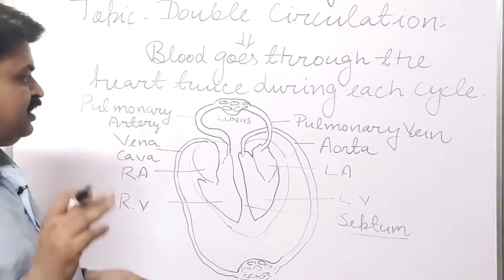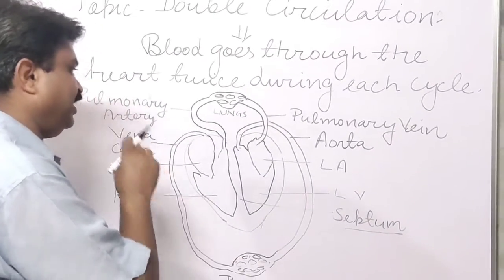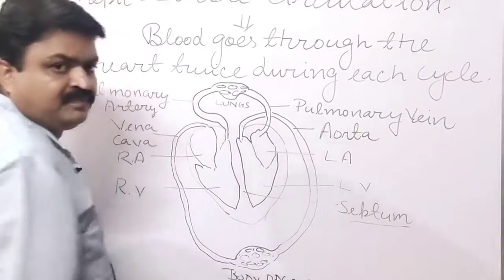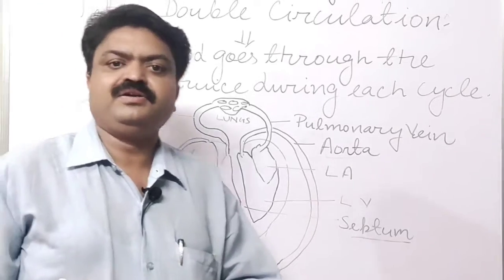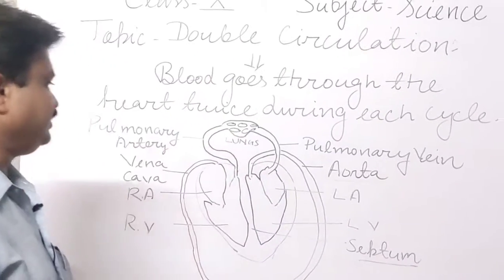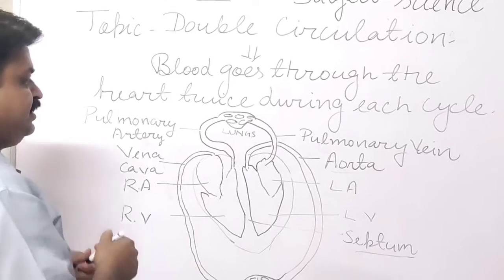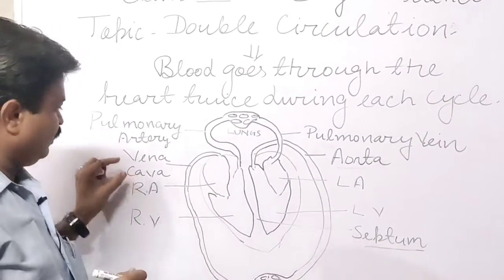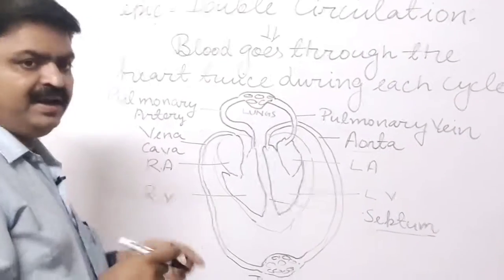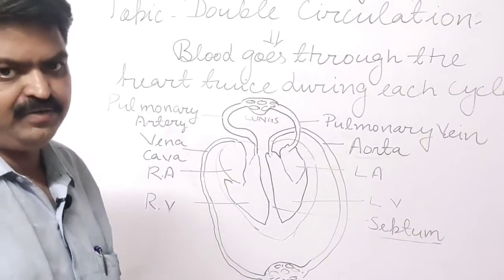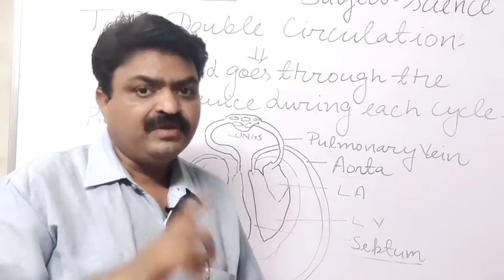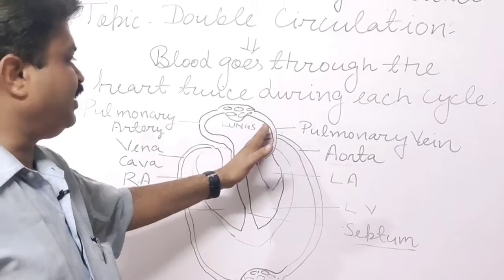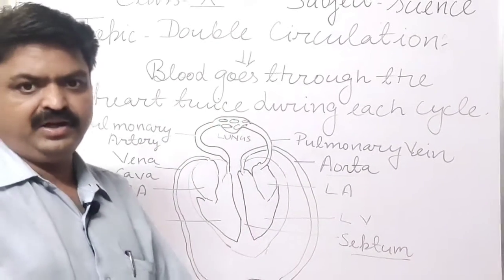There is a big artery connected with our heart that is known as the aorta, and the aorta is divided into arteries. There is also one big vein attached with our heart that is known as the vena cava, and the vena cava is divided into veins. With the heart, pulmonary vein and pulmonary artery are also connected.